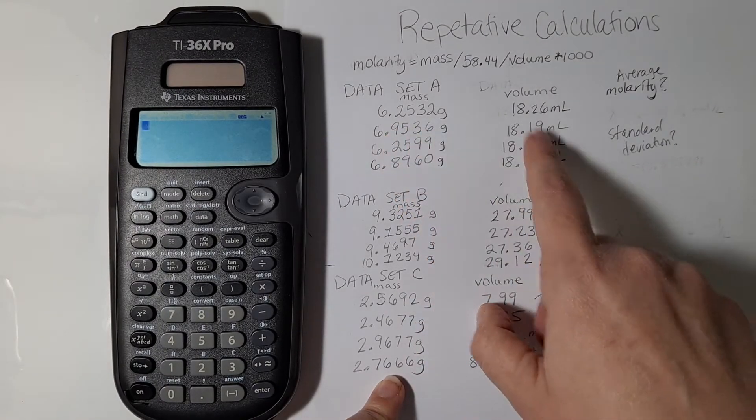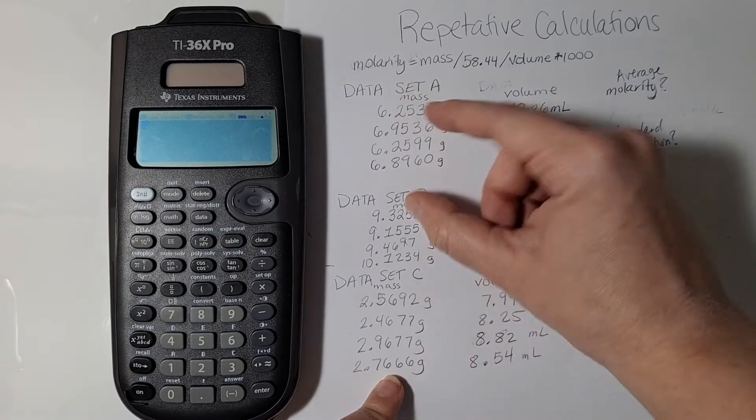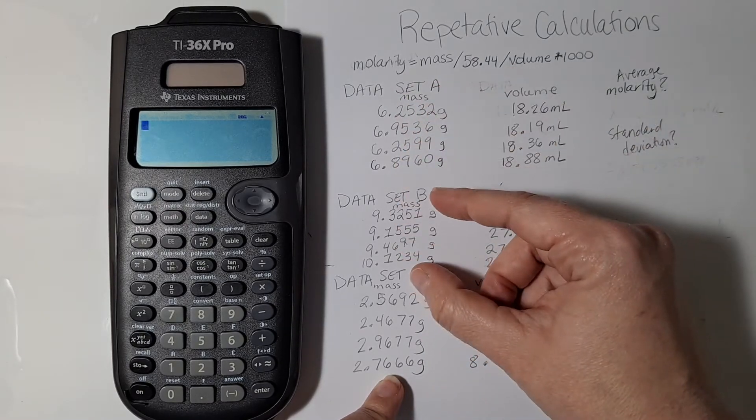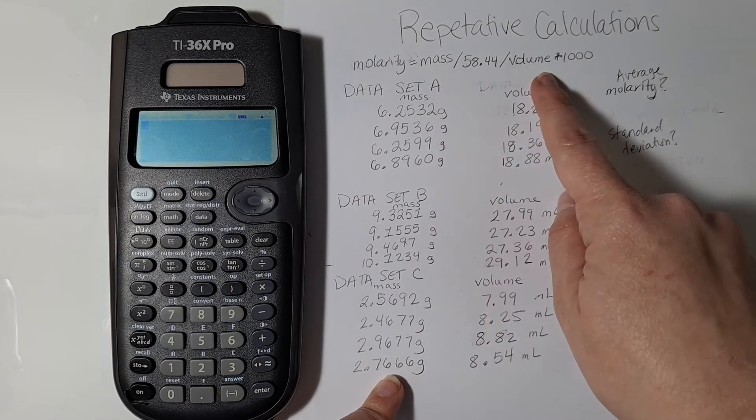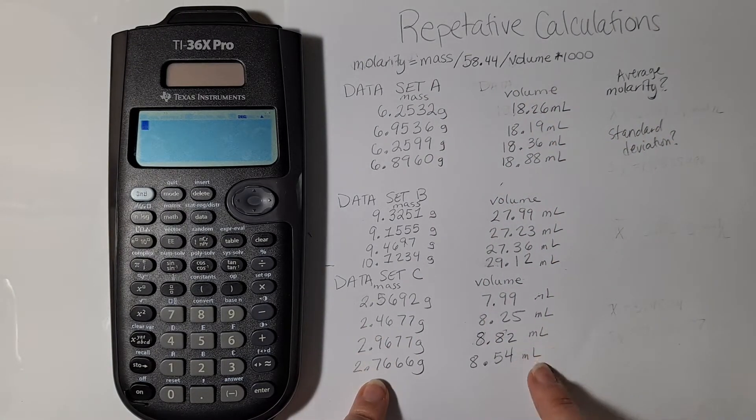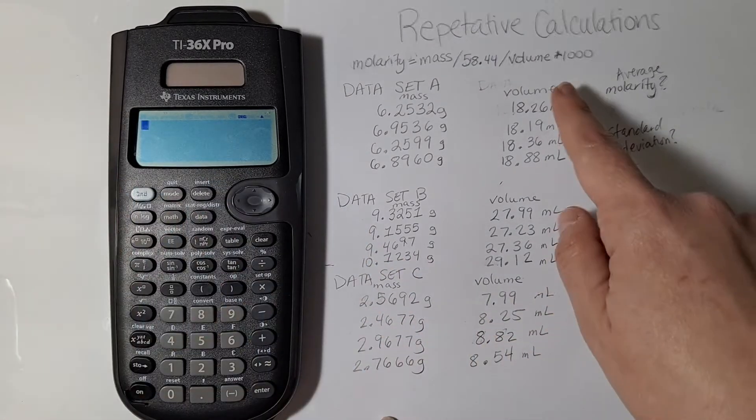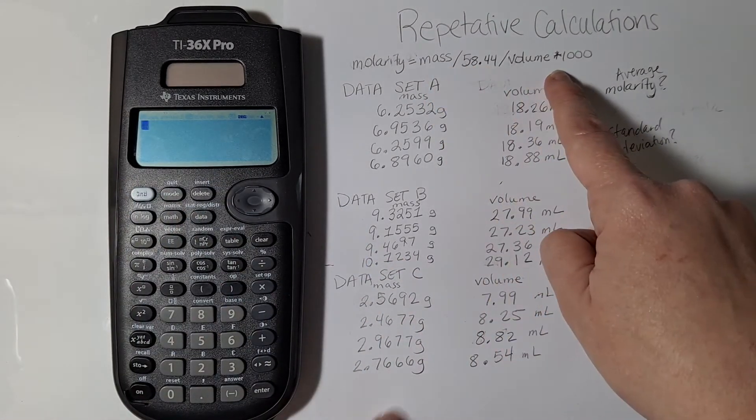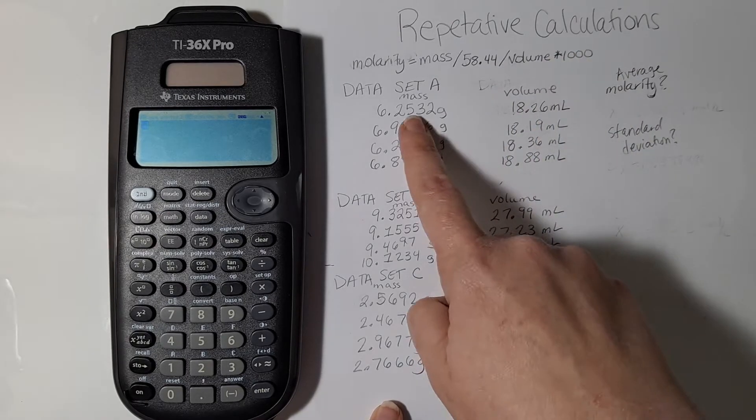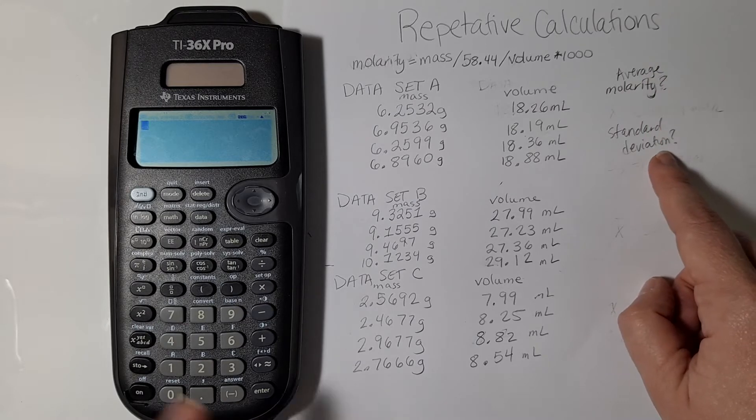In this problem I need to calculate the molarity for each trial, and then I have a data set A and a data set B, and I have to apply the same calculation to all 12 of these data points. So I'd really like to use my calculator to help me get through all those calculations quickly. After each data set I'm going to need to get my average and standard deviation.